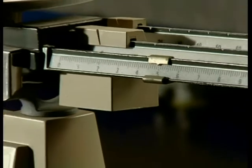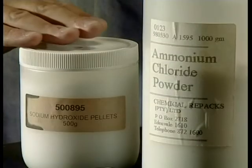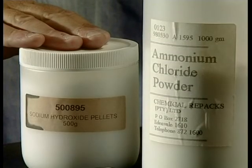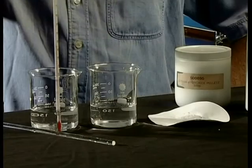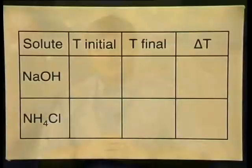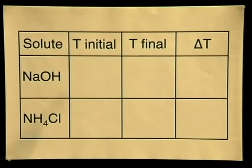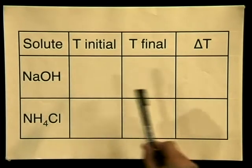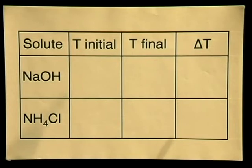You will also need the same mass of two different solutes, sodium hydroxide and ammonium chloride. A thermometer is used to see if there is a temperature change when the solute dissolves in the solvent. Now you can see that the experiment has been designed fairly. The independent variable is the type of solute used, while the dependent variable will be our temperature change. Now let's draw up a table to record our results. Whenever you carry out an experiment, make sure that you draw up a table to record your results before actually doing the experiment.